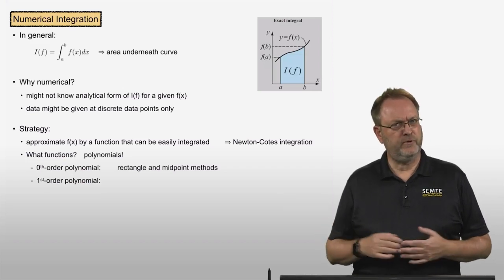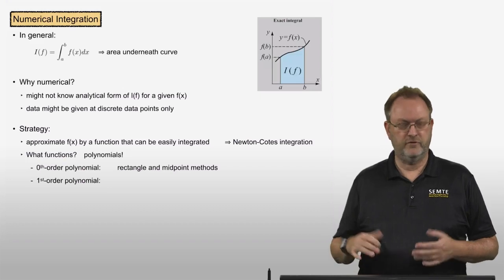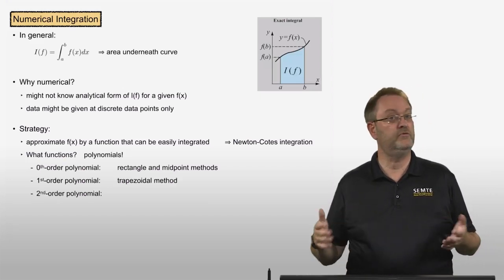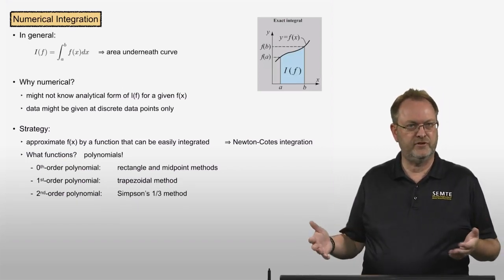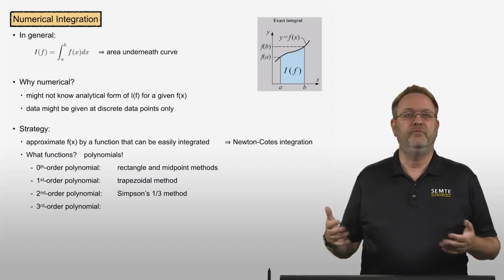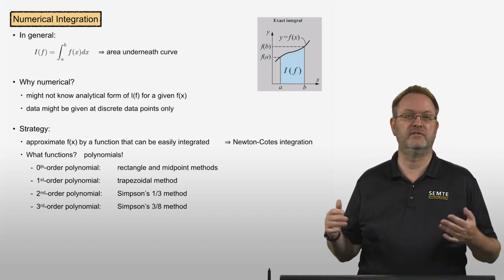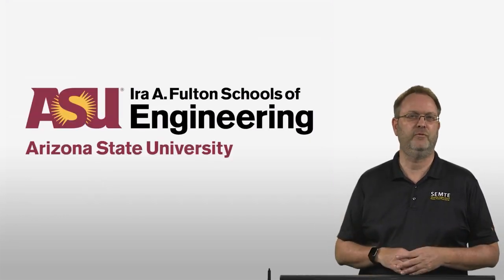If we use first-order polynomials, we call the resulting method trapezoidal method. If we use second-order polynomials, the method is called Simpson's one-third method. Finally, if we use third-order polynomials, the method is called Simpson's three-eighth method. Thank you for watching.